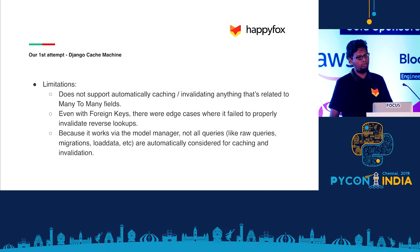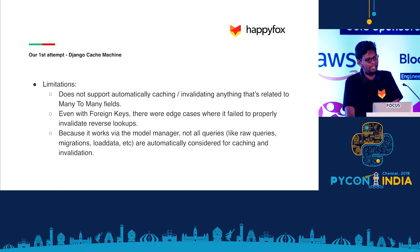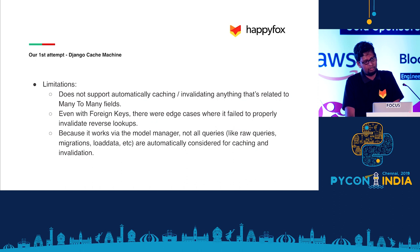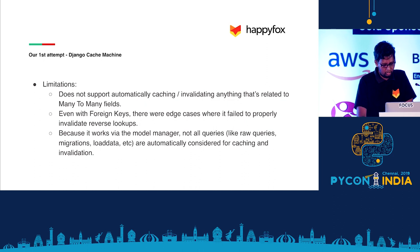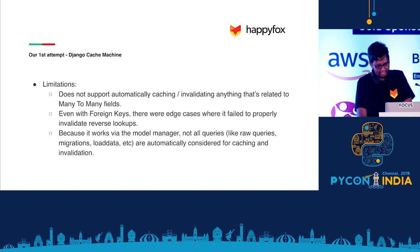The problem we ran into with this library was that it did not support models with many-to-many relationships. It had issues with foreign keys where we did reverse lookups. And because it works using the Django model manager, not every feature in Django uses the ORM in this way — some directly do database queries, and those things were not handled by this library. So we realized we have to go a little bit deeper than the model manager to accomplish this type of automatic caching and invalidation.